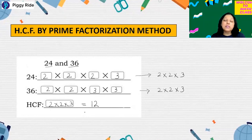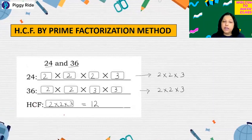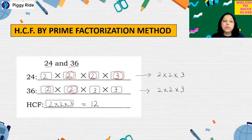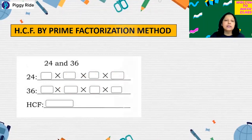So in this way we can find HCF by prime factorization. For big numbers it is very difficult to write all the factors, so to save time we apply the prime factorization method. First step: write the prime factorization. Second step: check all the common factors or the product of common factors. In this case 2 into 2 into 3 is common on both sides, so the answer is 12. This was our second method.